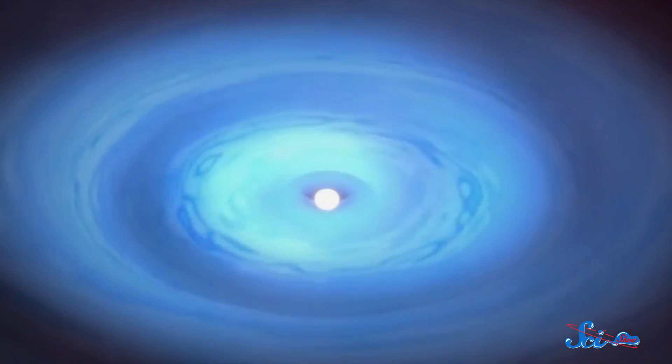Black holes are generally divided into two classes that are hugely different in size. First, there are stellar-mass black holes, which have the mass of several to maybe a few dozen suns. These are formed from supernova explosions of giant stars at the end of their lifetimes.